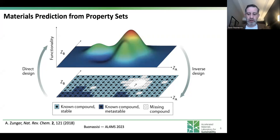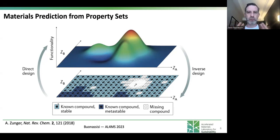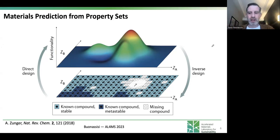The direct design — the way we are used to performing materials research — is you start with a CIF file of a material and then you compute its properties. You start with a list of atomic positions, atomic character, and fractional occupancy in the case of alloys, and you use that structural and compositional information to compute a set of functions: band gap, stability, thermal conductivity, and so on. Inverse design goes in the opposite direction — it's solving the inverse problem.